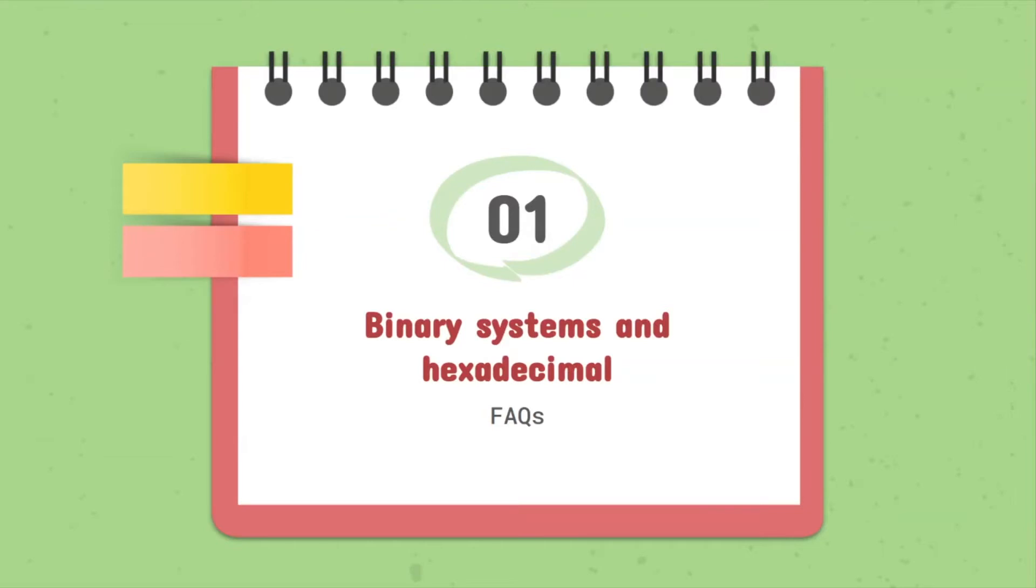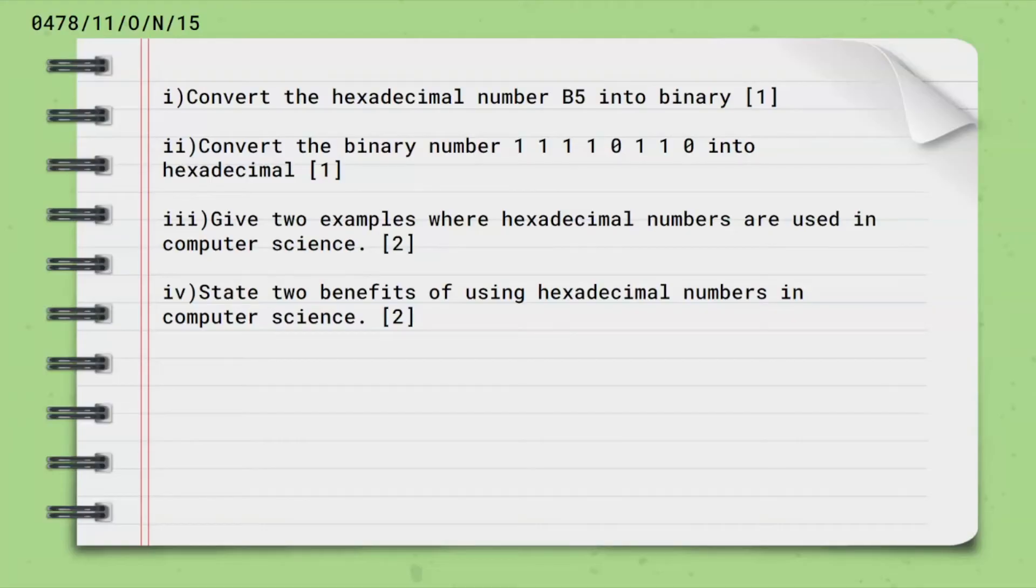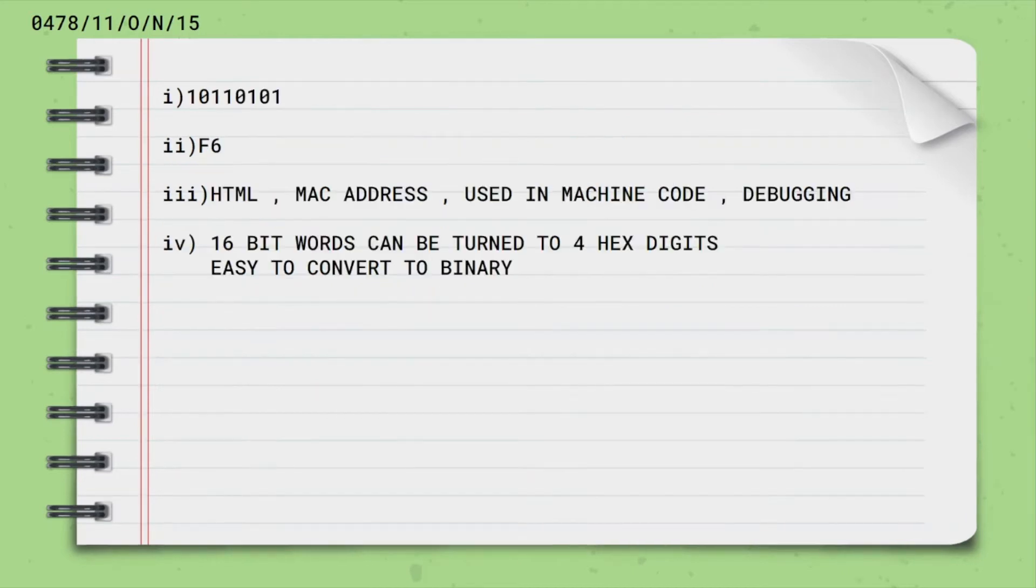The first chapter: binary systems and hexadecimal. Here is the past paper code for this question. Convert the hexadecimal number B5 into binary. Convert the binary number 11110110 into hexadecimal. Give two examples where hexadecimal numbers are used in computer science. State two benefits of using hexadecimal numbers in computer science. Just four questions and you are easily getting six marks. Six marks in just six lines.